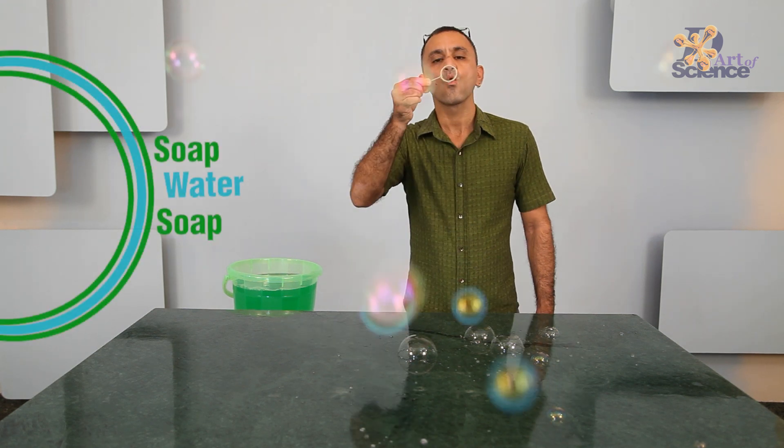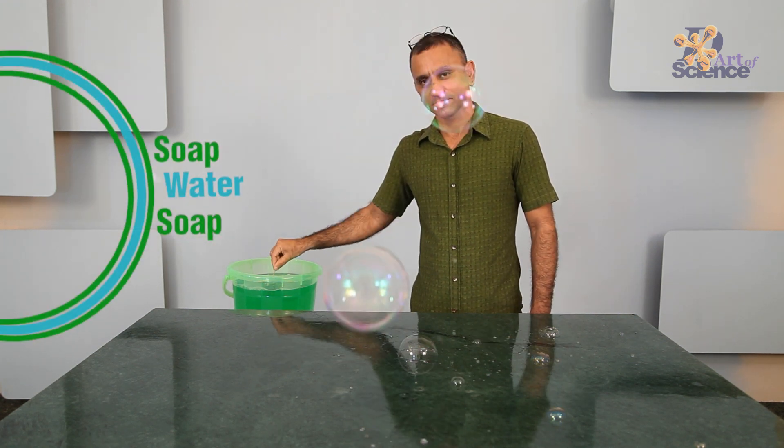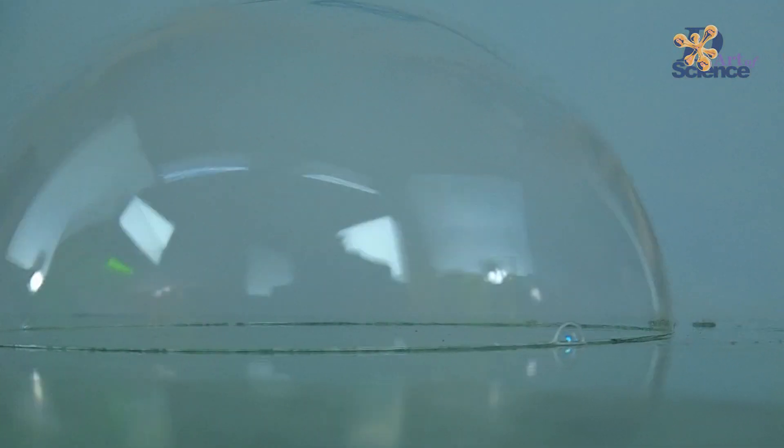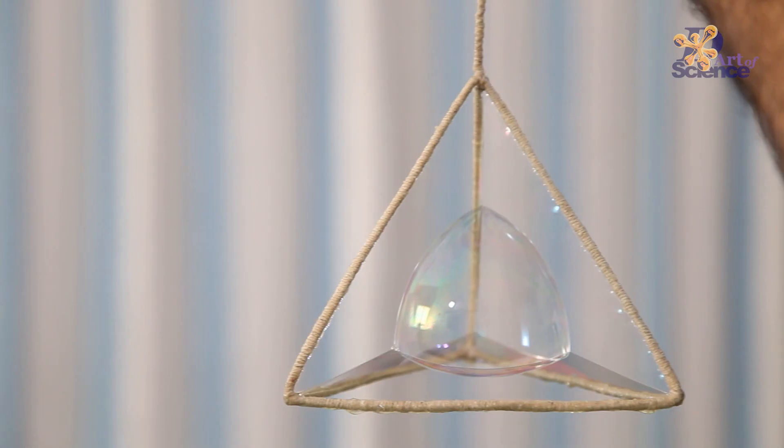Yep, you heard that right. The soap molecules separate the water molecules from each other, and therefore the gap between the molecules on the surface increases, which in turn causes the surface tension to decrease and allow the bubble to expand in size.